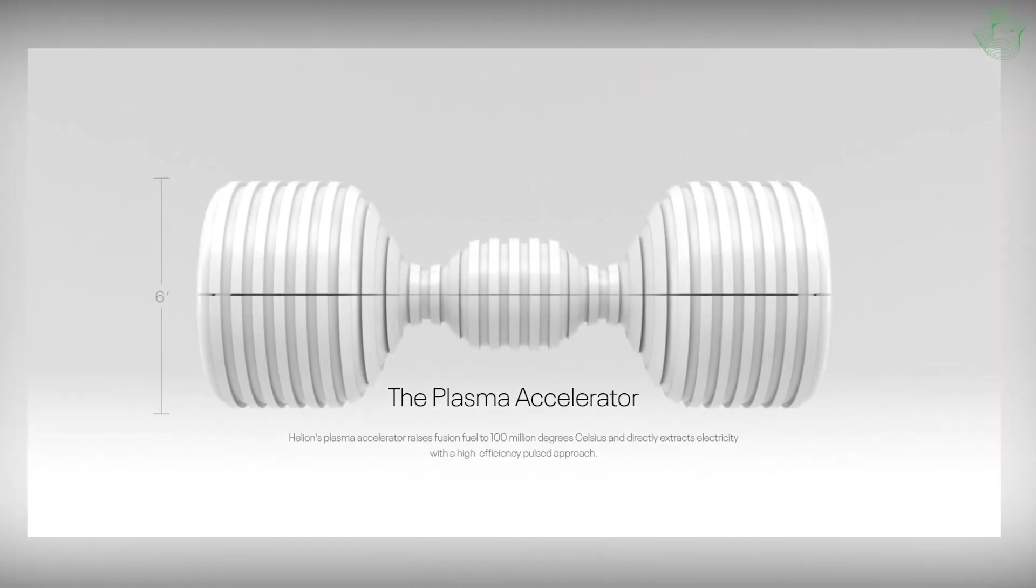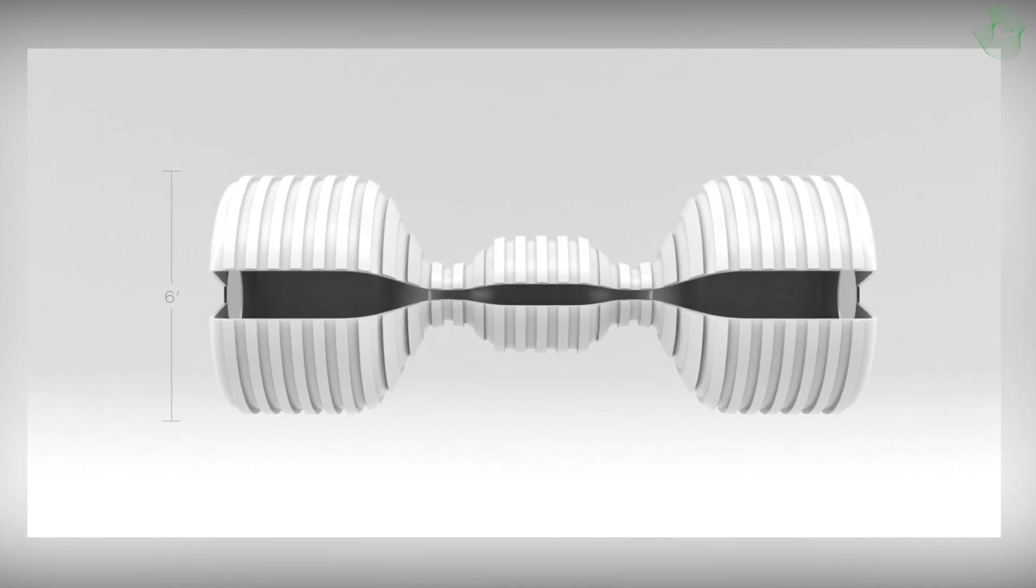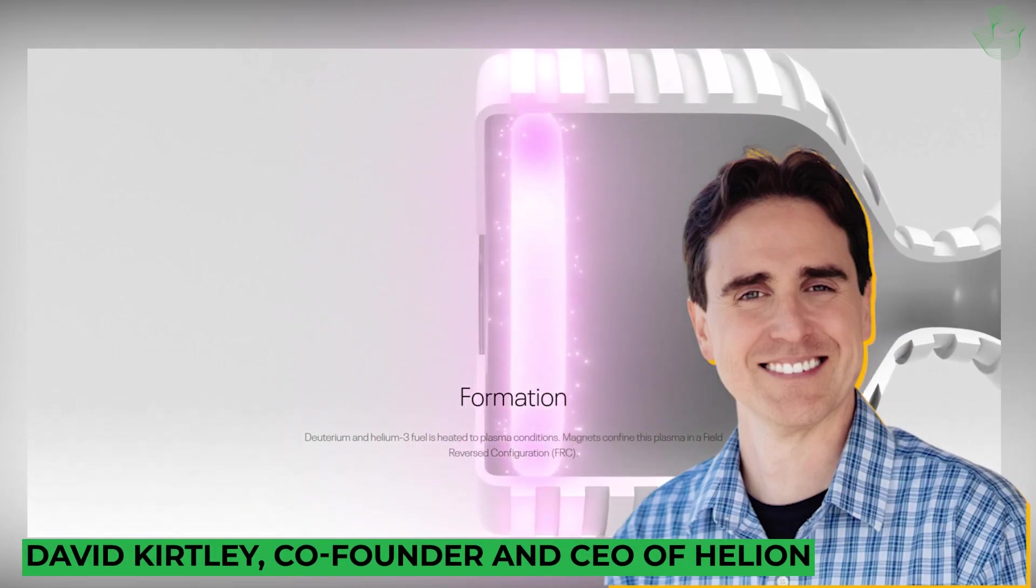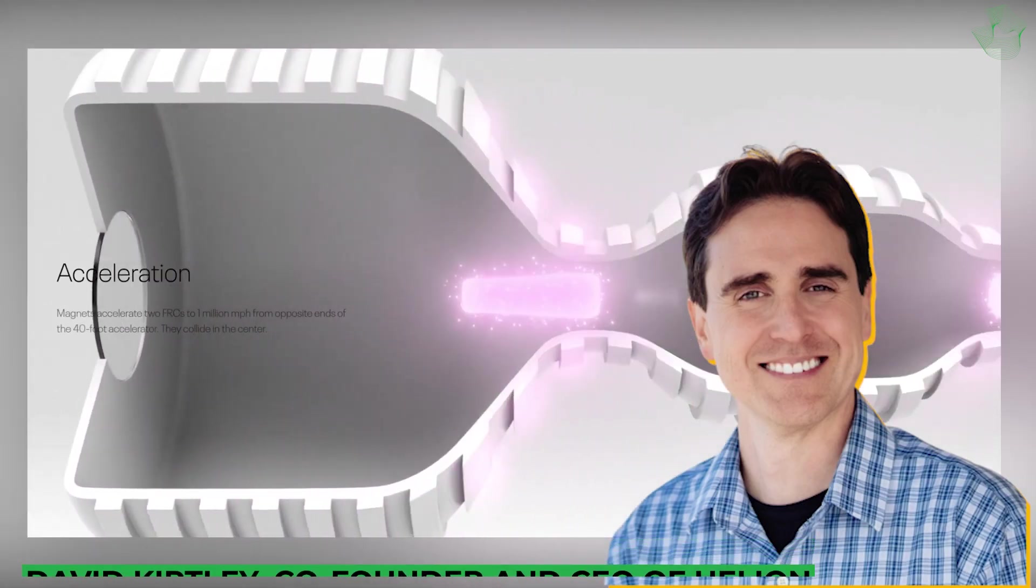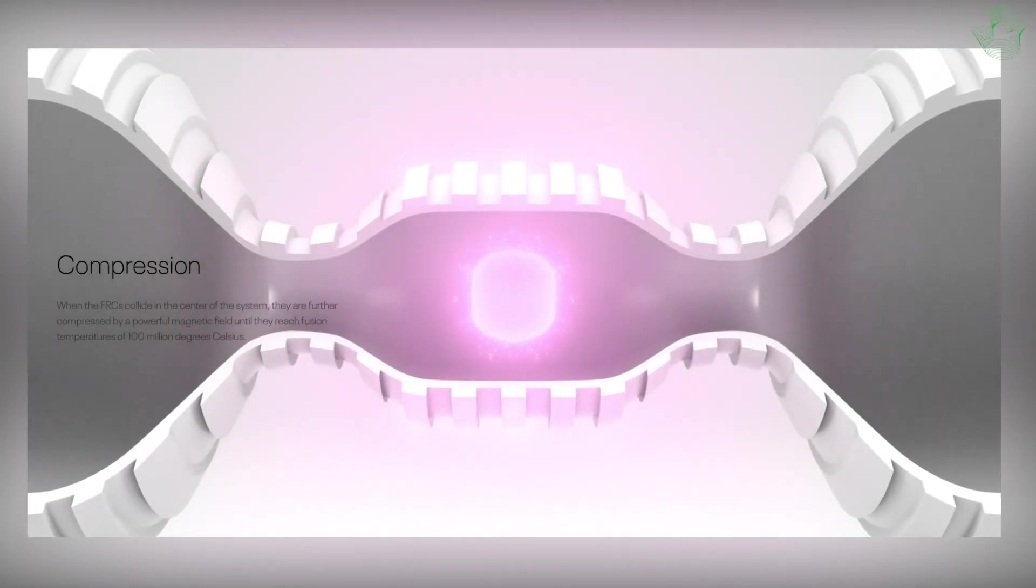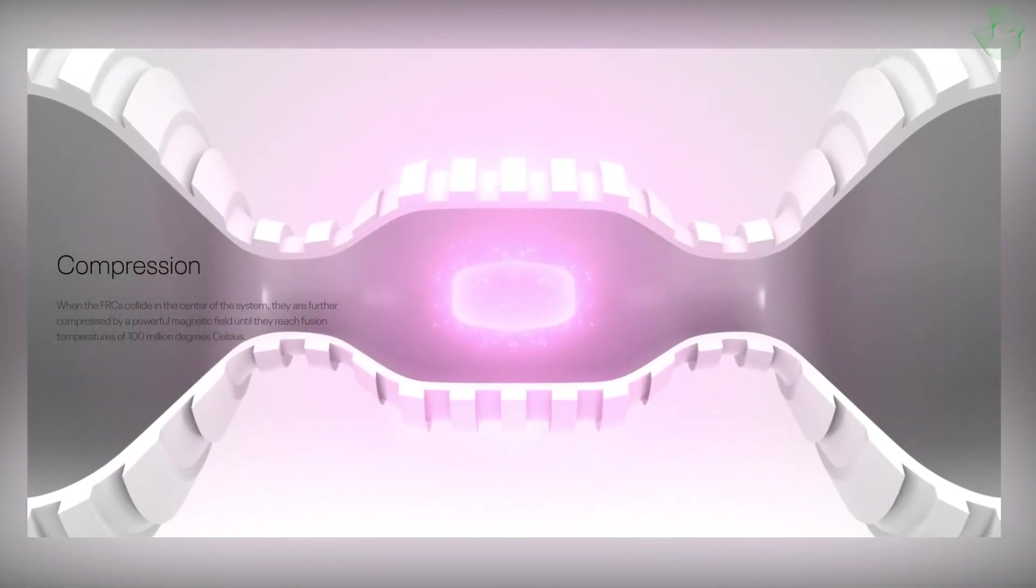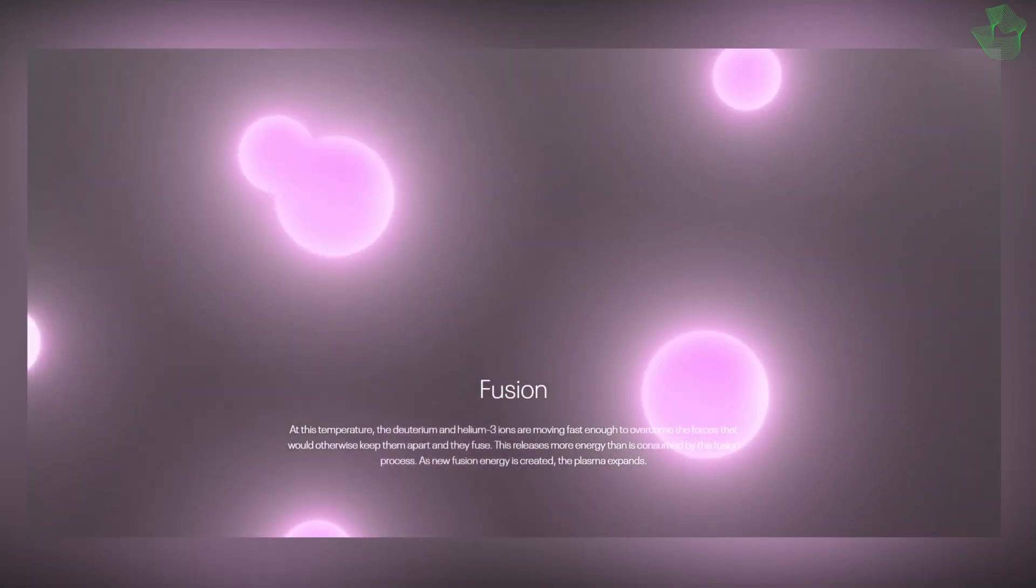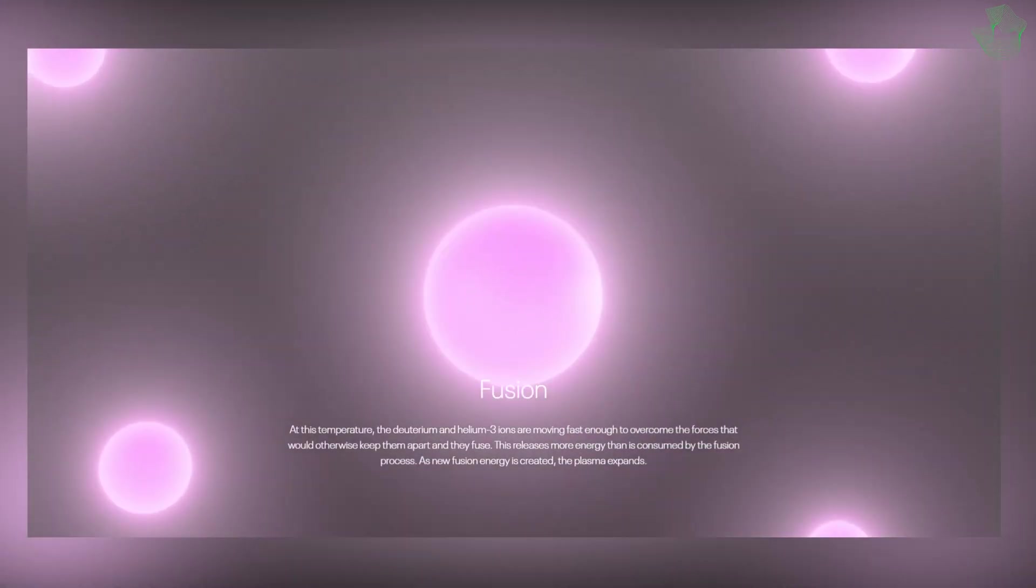Helion is one of few startups, along with Commonwealth Fusion Systems and TAE Technologies, attempting to manage and market fusion as a source of energy. According to David Kirtley, co-founder and CEO of Helion, the company does not use a tokamak. Helion is constructing a long, slender fusion device. Helion uses pulsed magnetic fusion. That indicates that the business compresses its fuel using aluminum magnets before expanding it to produce direct current electricity.